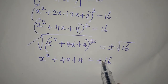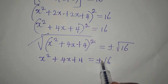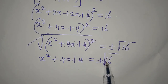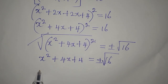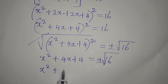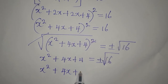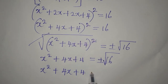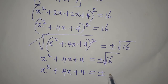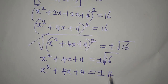This has to be the square root — the square root of 16 — and mind you, the square root of 16 is 4. So our x squared plus 4x plus 4 is equal to plus or minus 4.